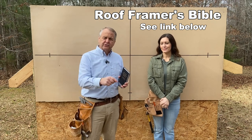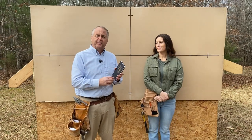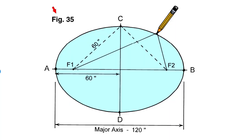I put a link in the description below so you'll know where to get one. We want to turn to page 212. Now in this drawing, it explains everything you need to know to draw an ellipse. Every ellipse has a major axis, which is its width from left to right, and a minor axis, which is its height from top to bottom.